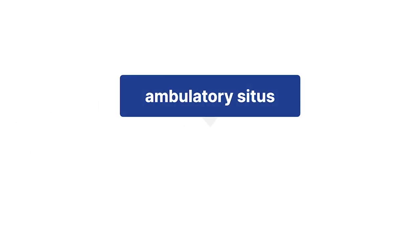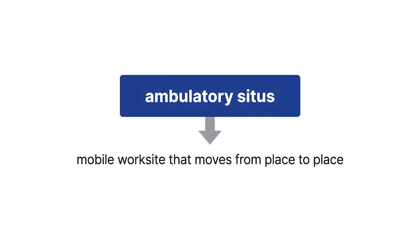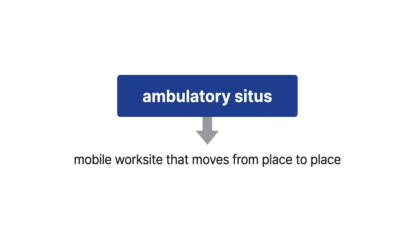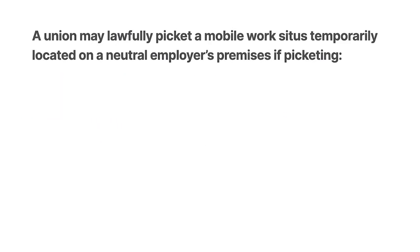An ambulatory situs is a mobile work site that moves from place to place. One example would be a delivery company whose trucks make stops at neutral third-party locations. In the Moore Dry Dock case,